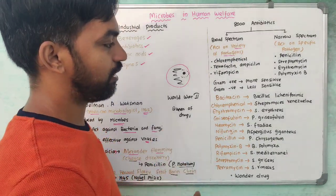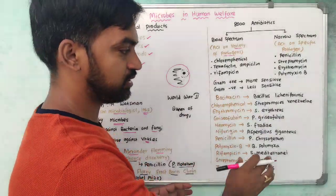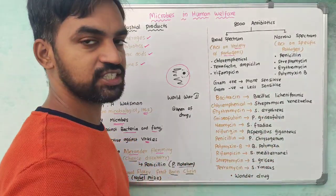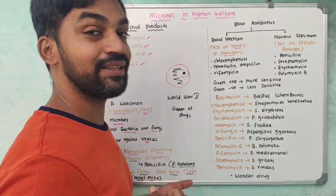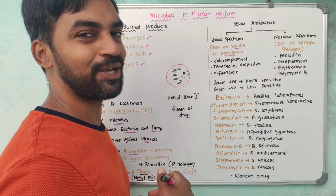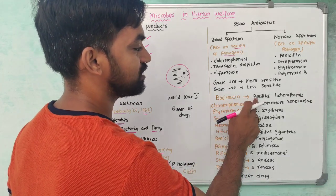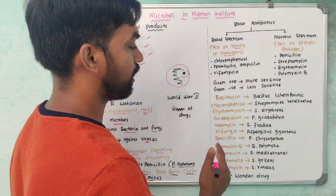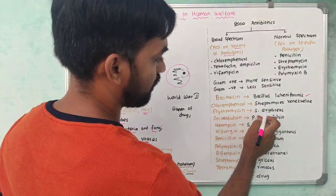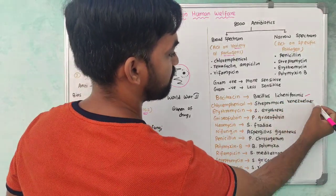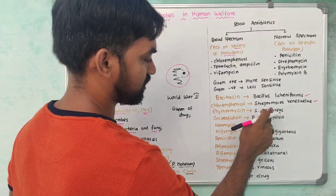Antibiotics are derived from bacteria or fungi. For example, bacillus licheniformis produces bacitracin. Chloramphenicol is produced from Streptomyces venezuelae. Erythromycin is produced from Streptomyces erythraeus. Streptomycin is produced from Streptomyces griseus. Tetracycline is produced from Streptomyces rimosus.